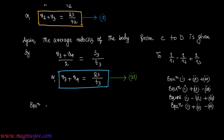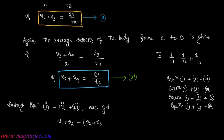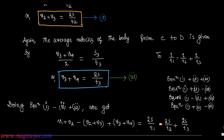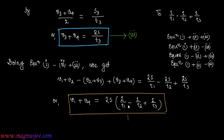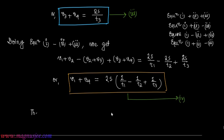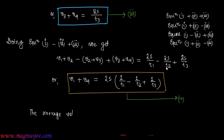Subtracting Equation 2 from the sum of Equations 1 and 3 — that is, doing Equation 1 minus Equation 2 plus Equation 3 — we get: (V1 + V2) - (V2 + V3) + (V3 + V4) = 2S/T1 - 2S/T2 + 2S/T3, which simplifies to V1 + V4 = 2S(1/T1 - 1/T2 + 1/T3). This is Equation 4.